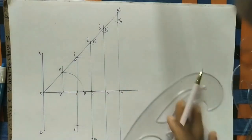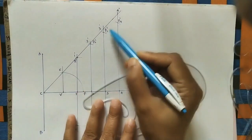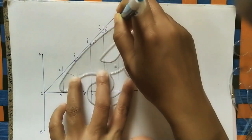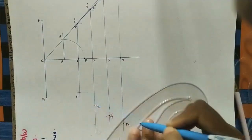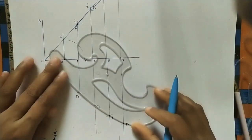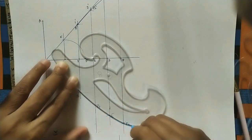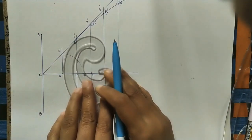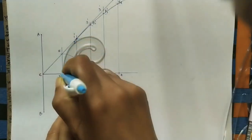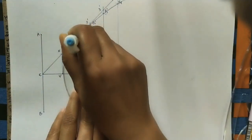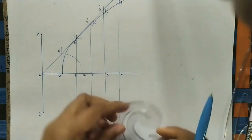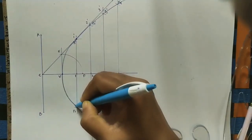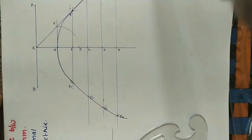Let us do it. For joining these points I am using the French curve, so by using it we can do this quickly. First I will join these points — make sure all points should come on this curve. This side also I will do with this curve. For joining this part, take the French curve and join this point to this point, then do the remaining curve. So this is the parabola by using the general method or eccentricity method.